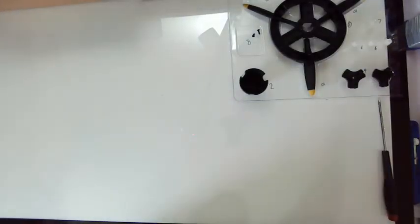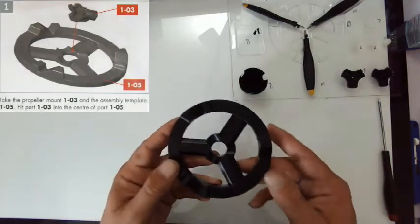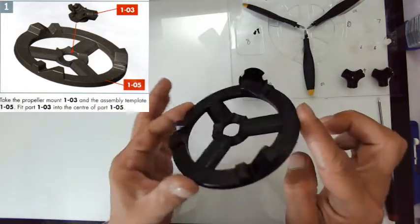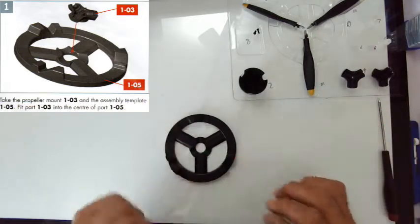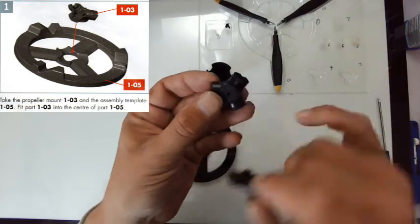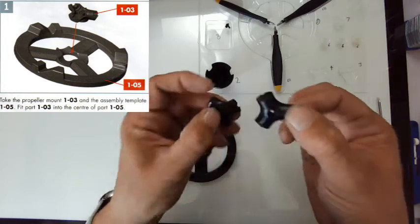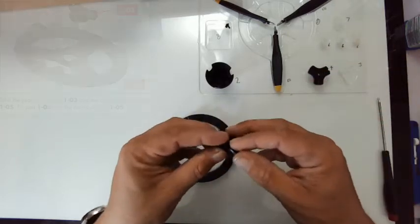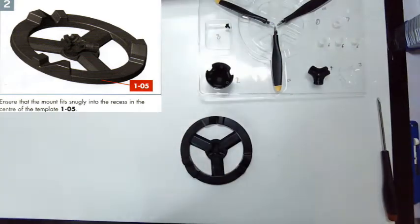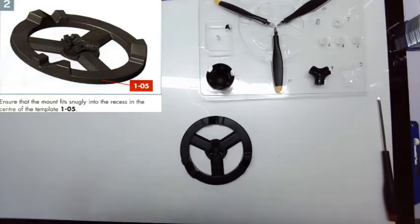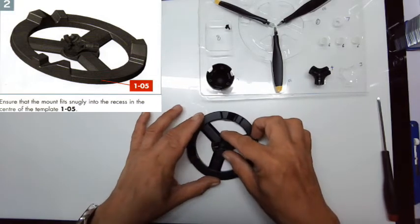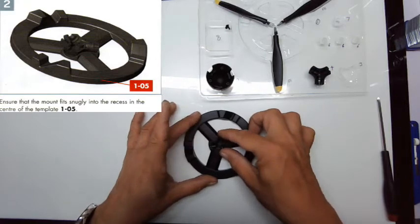Let's begin stage one. We need part 105, the assembly template. This is only plastic but it doesn't need to be anything else. It's specially shaped so we can assemble the propeller. Next part is 103. If I compare this to four, you see this has a flat piece, and this one has a recessed piece. So piece number three goes into the middle, any which way you want. We need to make sure the mount fits snugly into the recess in the center of the template, which you can see there it does.